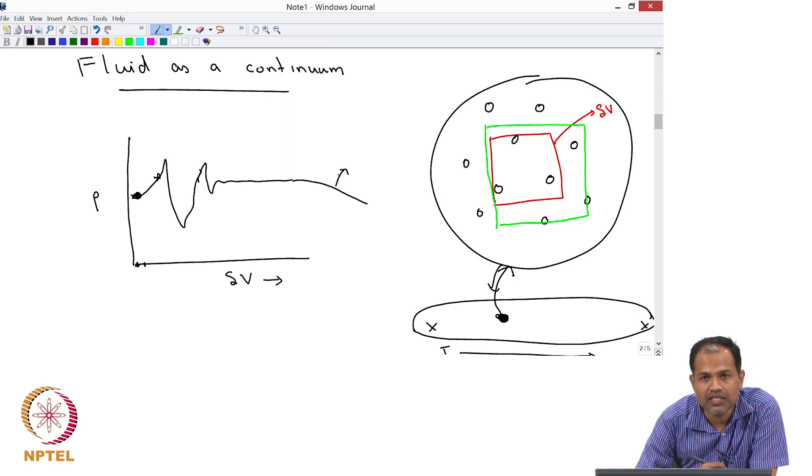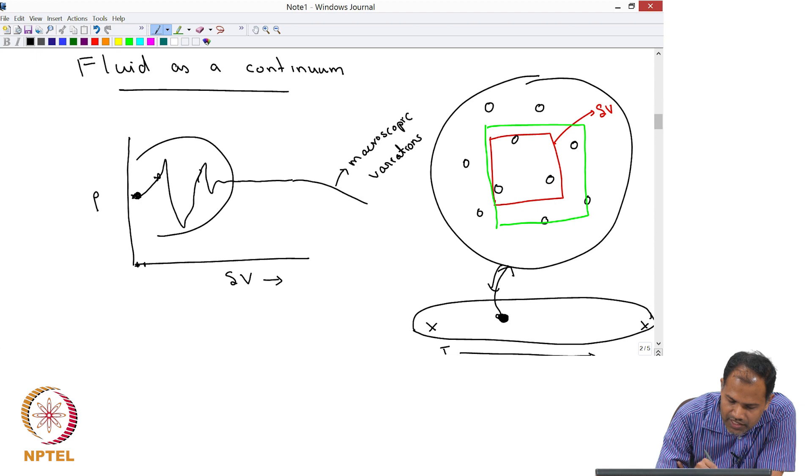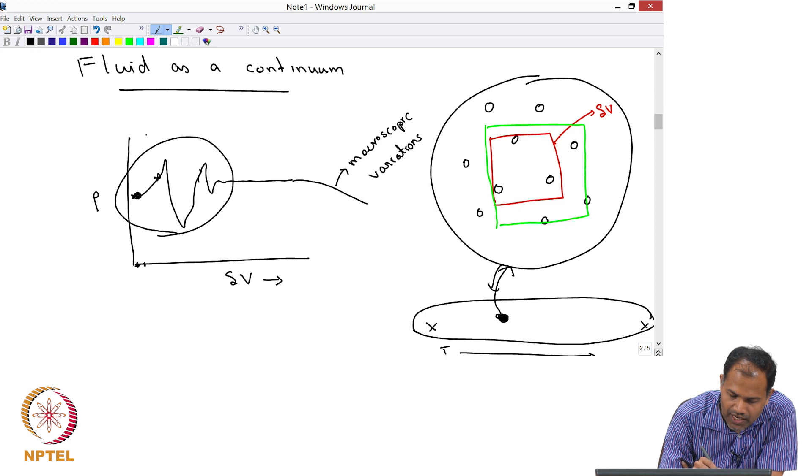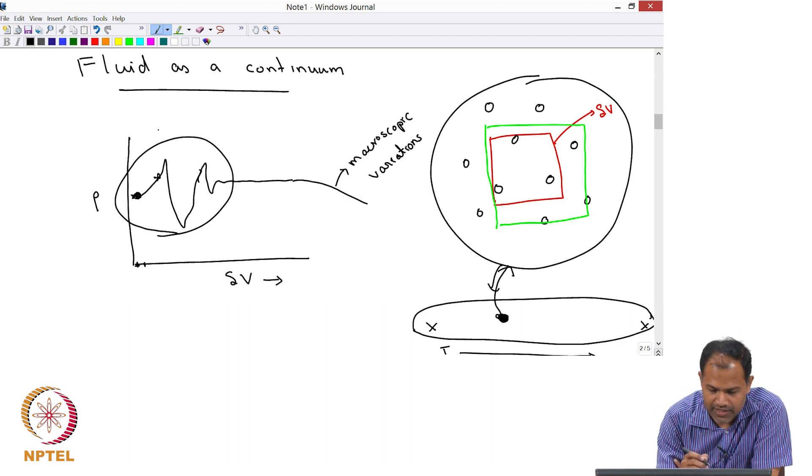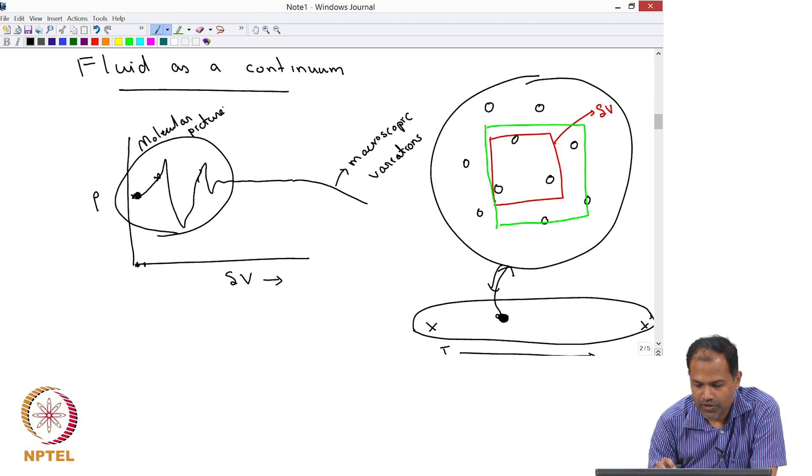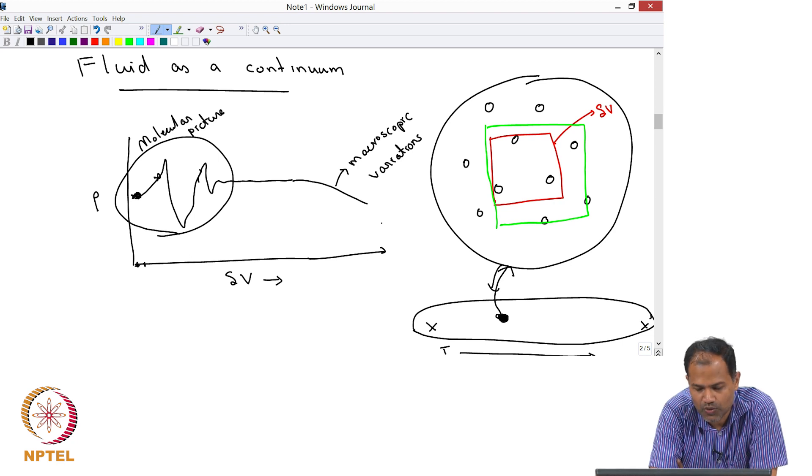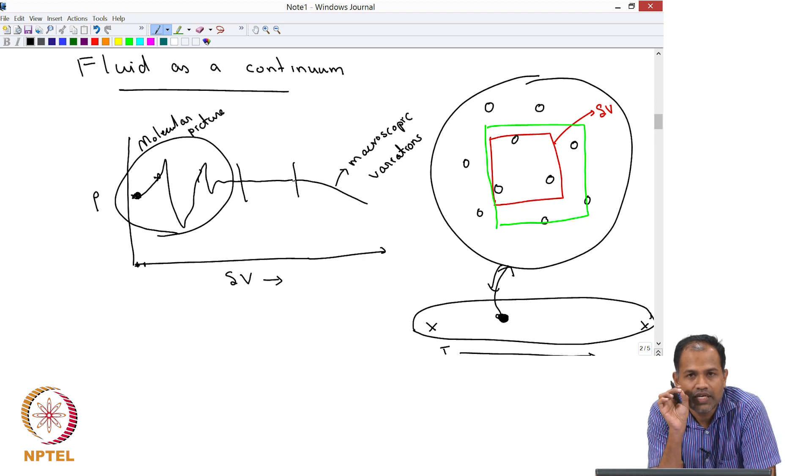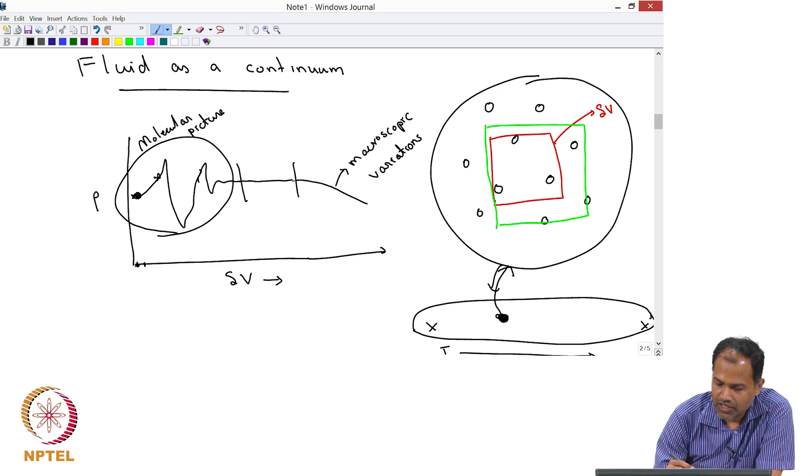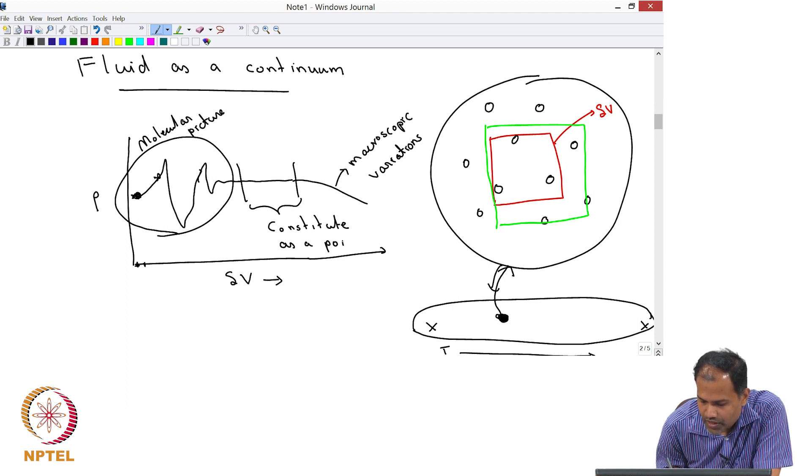This region where you start seeing density changes is because of the macroscopic variations, while in the first region the density fluctuation is because you are at a length scale comparable to the molecular length scale. This is a molecular picture, while on the right hand side you start seeing density variations because pressure changes, temperature changes, and so on. In between, there is a region where you will see density being constant, and that is the region you consider in your continuum approach. This region will constitute as a point in your continuum.